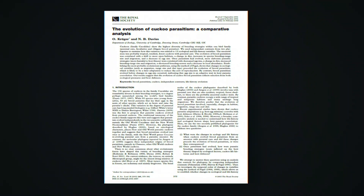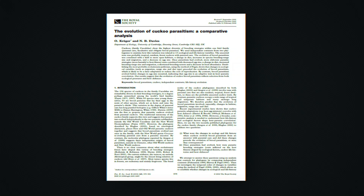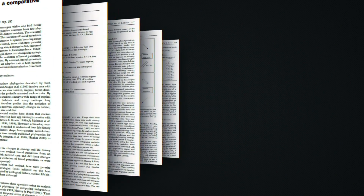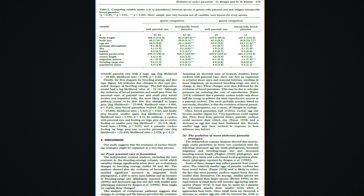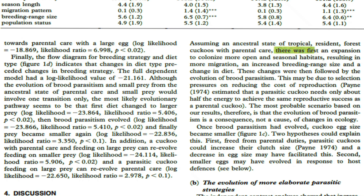One study says that brood parasitism evolved as a result of changes in ecology. The authors suggest an initial habitat expansion resulted in more bird migration, which increased the breeding range size and the availability of new food sources. These ecological changes would have required a reduction in the energy invested into reproduction, and may have favoured the evolution of brood parasitism.